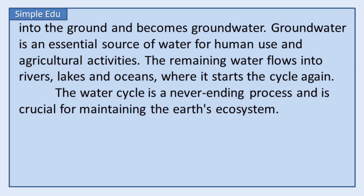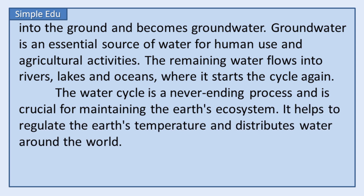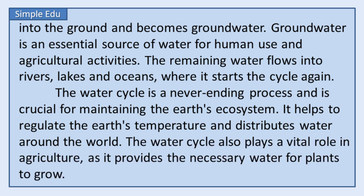The water cycle is a never-ending process and is crucial for maintaining the Earth's ecosystem. It helps to regulate the Earth's temperature and distributes water around the world. The water cycle also plays a vital role in agriculture as it provides the necessary water for plants to grow.